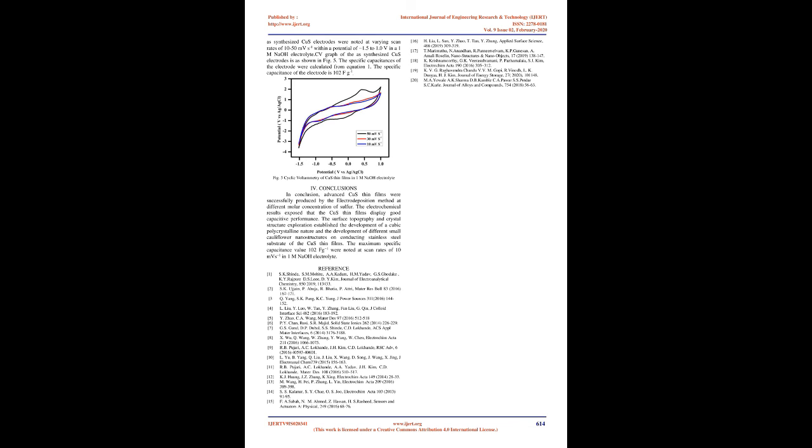4. Conclusions: In conclusion, advanced CuS thin films were successfully produced by the electrodeposition method at different molar concentration of sulfur. The electrochemical results exposed that the CuS thin films display good capacitive performance. The surface topography and crystal structure exploration established the development of a cubic polycrystalline nature and the development of different small cauliflower nanostructures on conducting stainless steel substrate of the CuS thin films. The maximum specific capacitance value 102 F/g were noted at scan rates of 10 mV/s in 1M NaOH electrolyte.